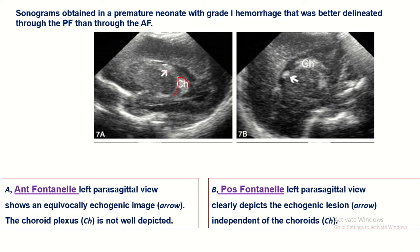Through the anterior fontanelle approach, the choroid plexus and a hemorrhage can be seen, but the two structures cannot be clearly separated. However, through the posterior fontanelle approach, the choroid plexus and the hemorrhage can be clearly distinguished.